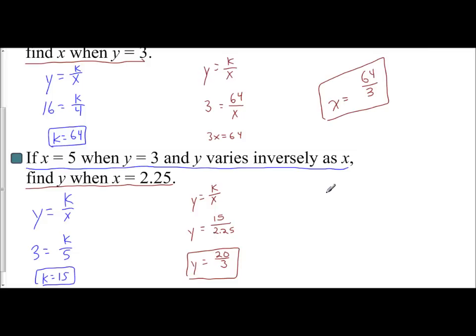And so when it comes to inverse variation, we take a look at the relationship between the variables. We use the first half. We're given x and y to find our k. And then we apply that k to the second half when we're trying to find a value of an unknown variable.